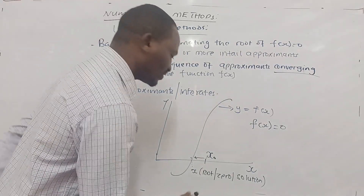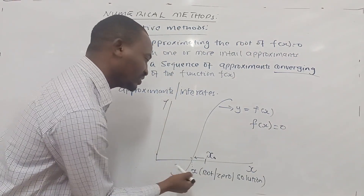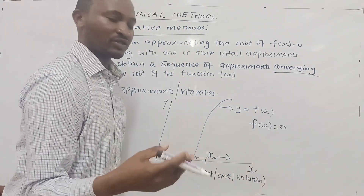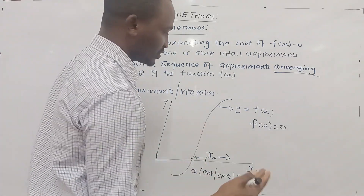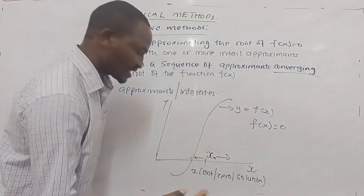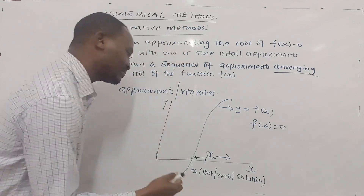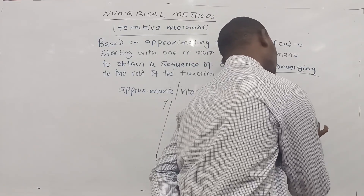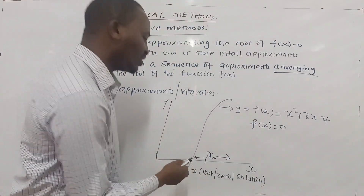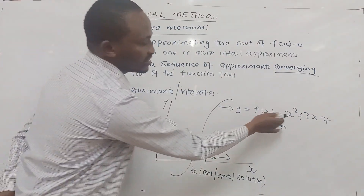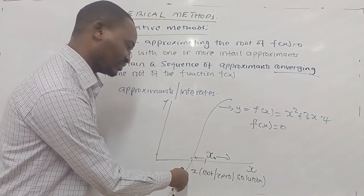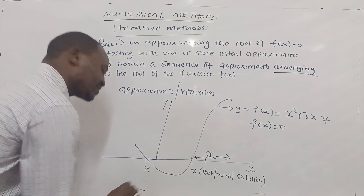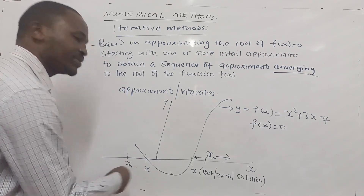If our approximates or iterates are not approaching the actual root but are diverging — getting away from the actual root — then we will not be able to get the root of f(x) = 0. By then, you will have made a mistake somewhere, so you need to check your working. For example, if f(x) = x² + 3x − 4, we expect two roots. If there is another root, we need another initial approximate x0 to converge to that second root.